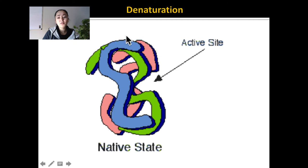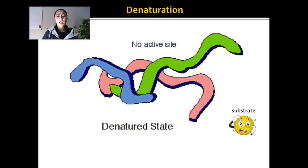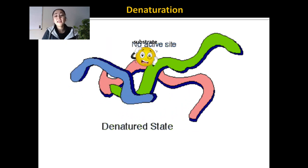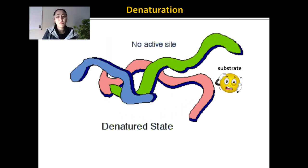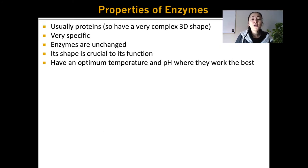So what happens whenever an enzyme denatures? If this is the active site and the enzyme is working properly, the substrate can go right into the active site and the chemical reaction can happen. However, in the denatured state, that substrate cannot find the active site — the active site is no longer present. What happens is that substrate starts to build up in your body because it cannot be changed into a product.